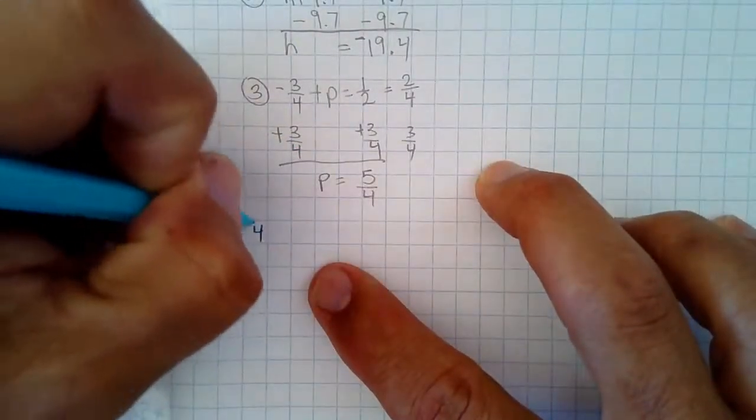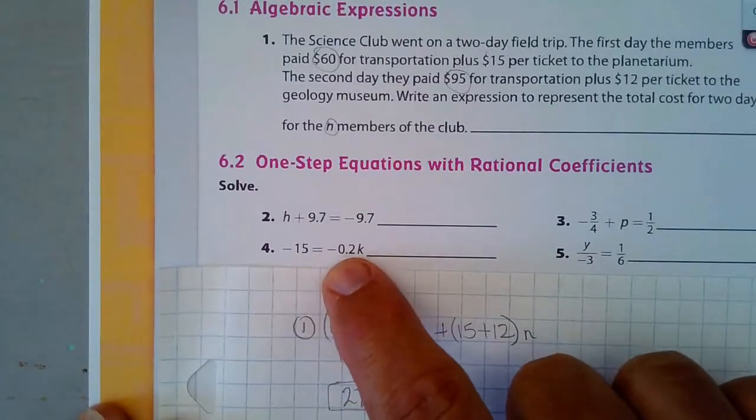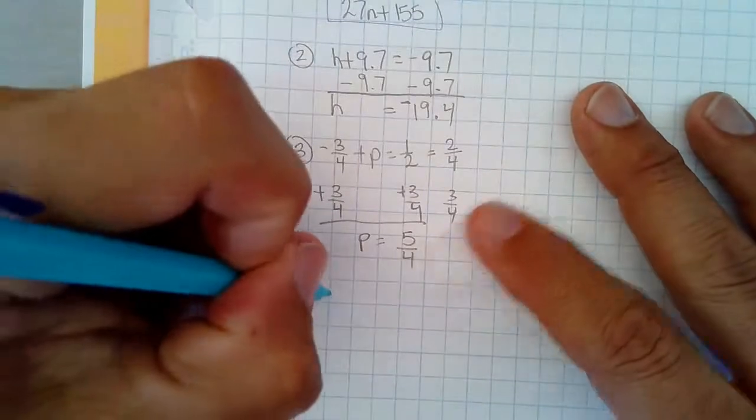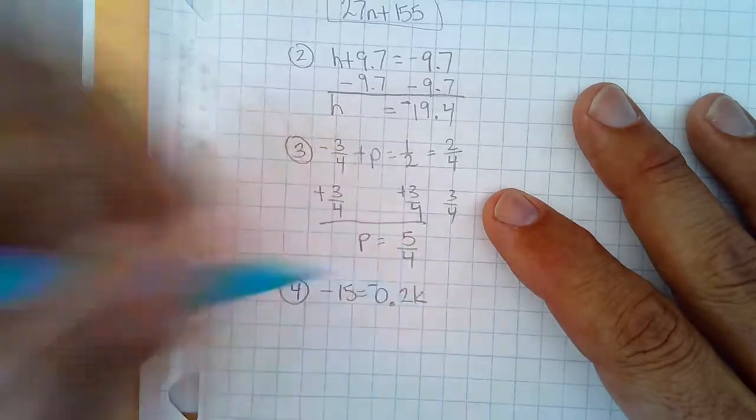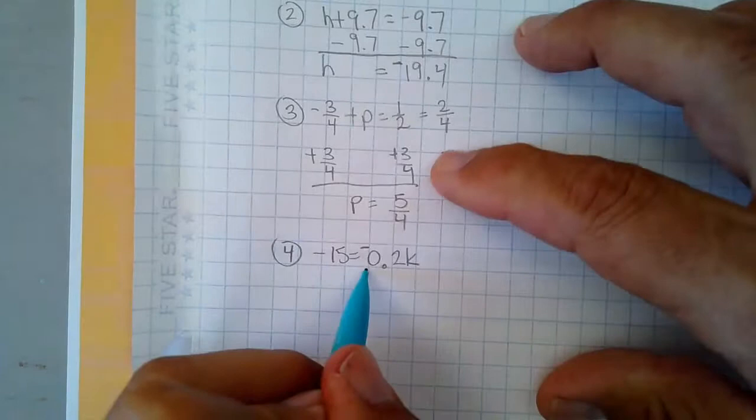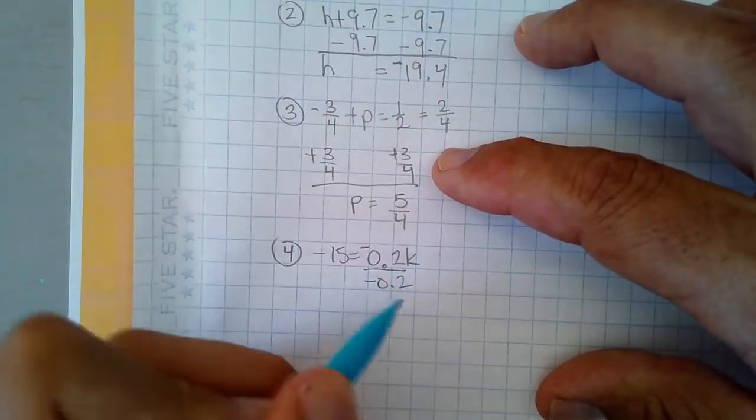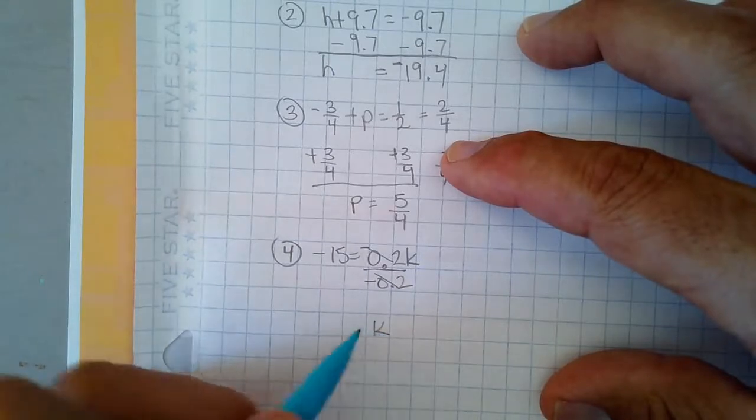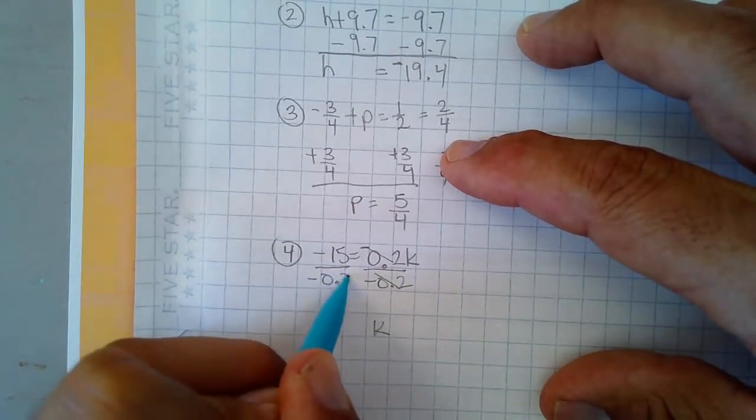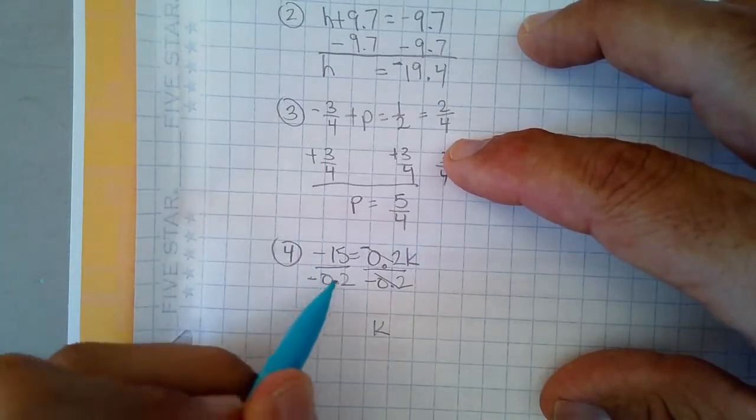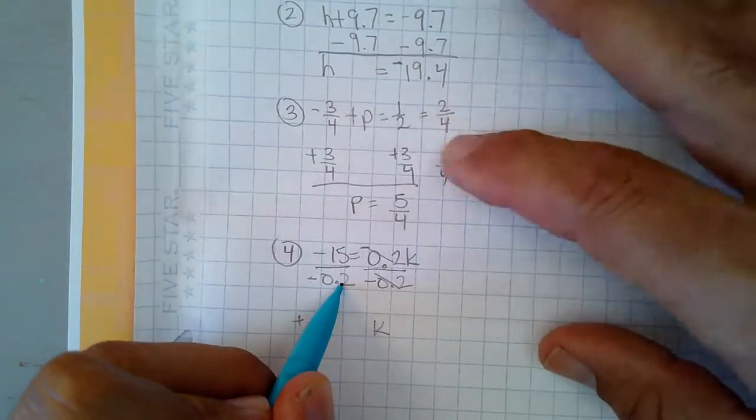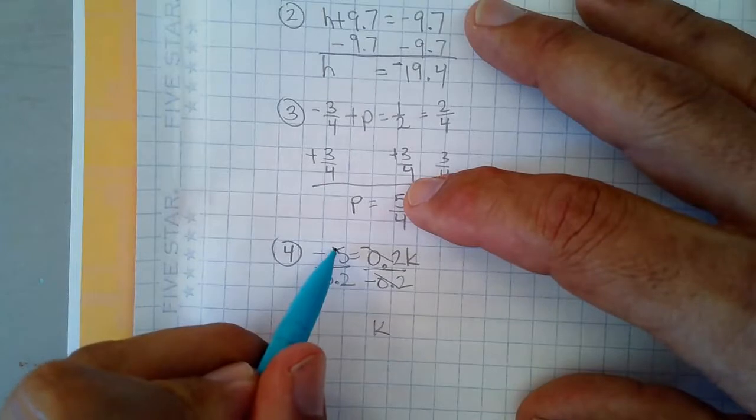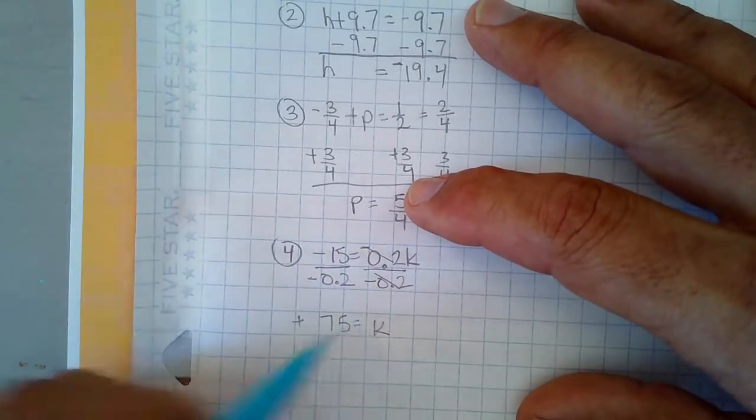Number four is negative 15 equals negative 0.2k. I have to, since k has been multiplied, I have to divide by negative 0.2, the exact same number. Those cancel. Divide this side by negative 0.2. And negative divided by negative is positive. How many 0.2s fit into 15? Well, let's see, five 0.2s fit into 1. And 5 times 15 is 75. So it should be 75. So divide that by that, and you get 75 equals k.